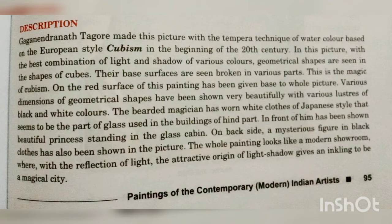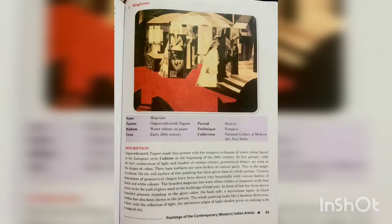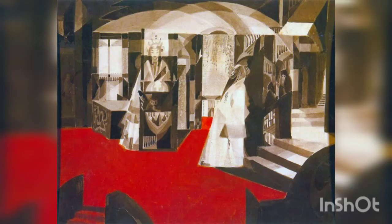Now I am starting the description. Gaganendranath Tagore made this picture with the tempera technique of watercolor, based on the European style of cubism, in the beginning of the 20th century. In this picture, the best combination of light and shadow of various colors can be seen. The base surface is seen broken into various parts — geometrical shapes in the form of cubes. This is the magic of cubism.